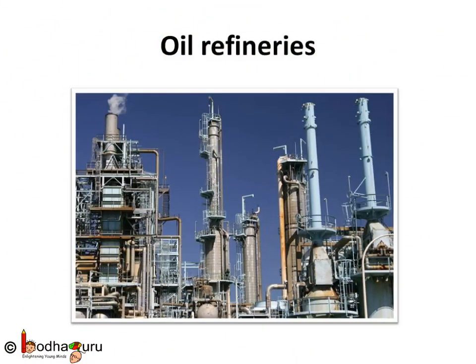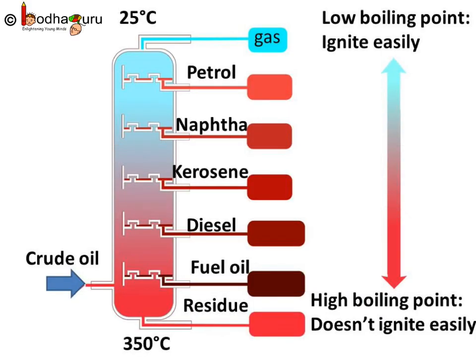Petroleum is a complex mixture. Petroleum refining means separating its components and it is carried out at petroleum refineries. This separation process is known as fractional distillation. This process is actually for separating chemical components by their boiling point. The mixture is heated to a temperature at which one or more fractions of the compound will vaporize. Different components vaporize at different temperatures and thus get separated.